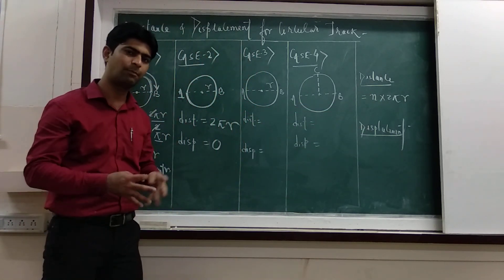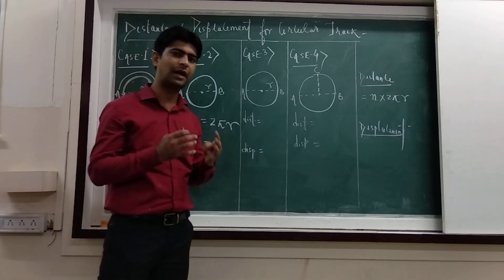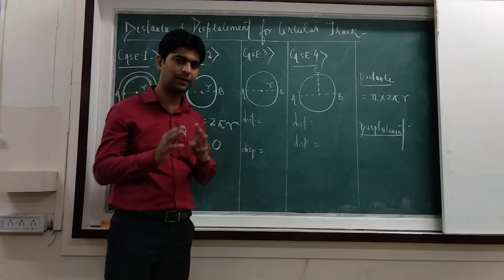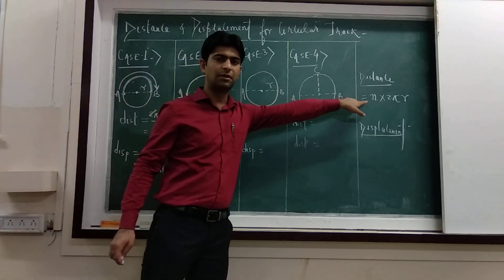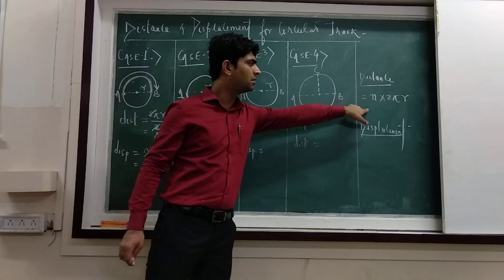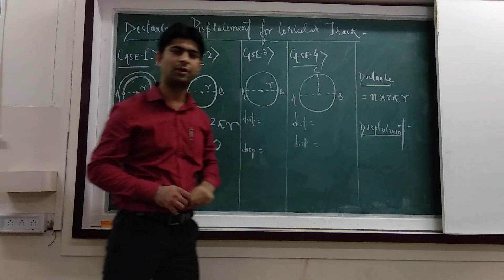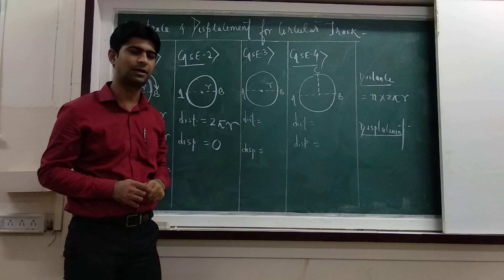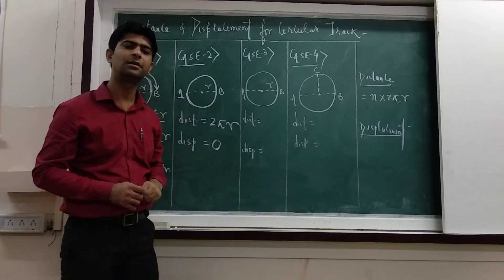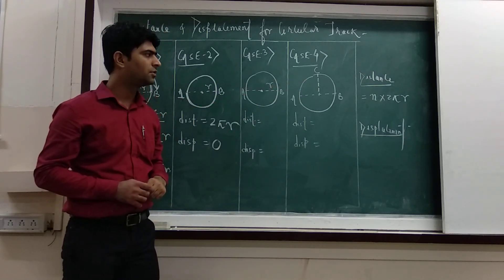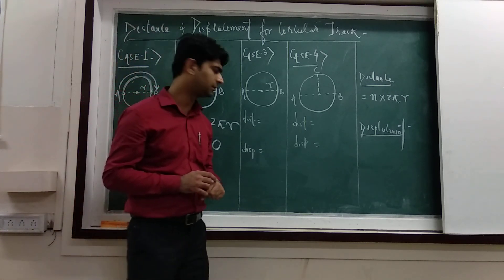Whatever the number of revolutions — 2 and a half, 3 and a half, 5 and a half, 99 and a half — you put that value for n. For example, if the number of revolutions is 99 and a half, you put 99.5 and multiply by 2πr. This is the general formula to calculate the distance covered by a body travelling on a circular path.